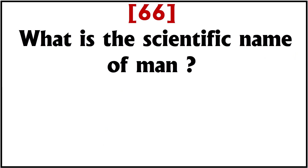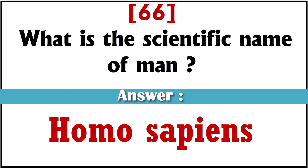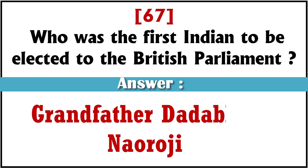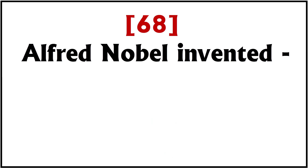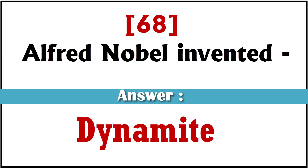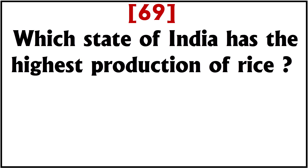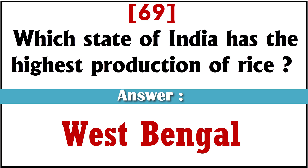What is the scientific name of man? Homo sapiens. Who was the first Indian to be elected to the British Parliament? Dadabhai Naoroji. Alfred Nobel invented? Dynamite. Which state of India has the highest production of rice? West Bengal.